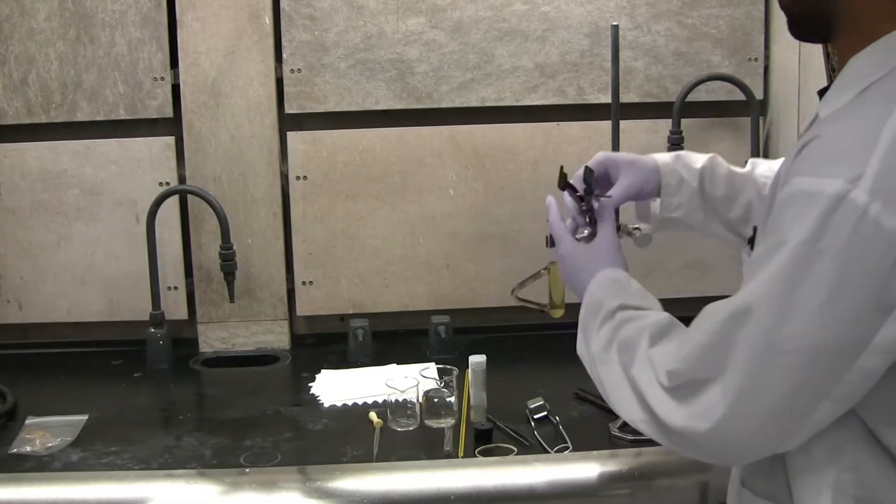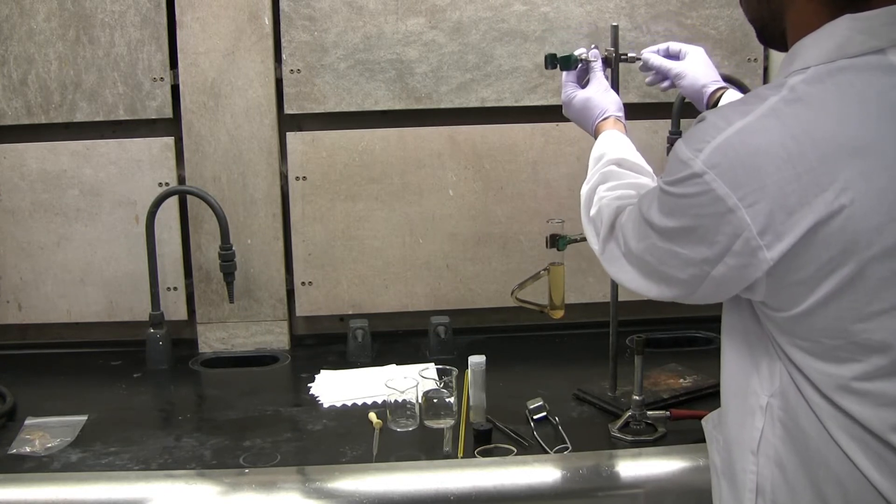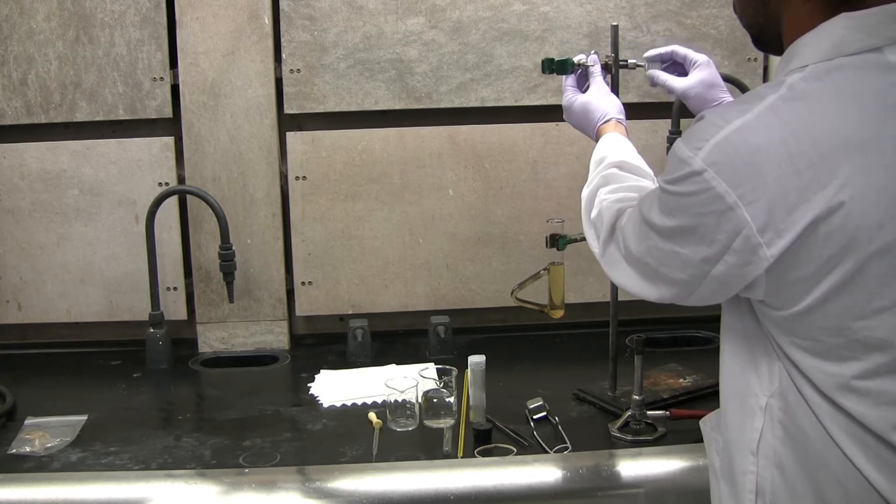First, start by assembling the clamp onto the retort stand. Make sure it is fastened tightly and securely.